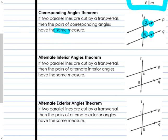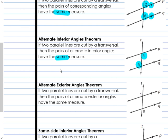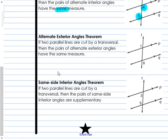The alternate interior angles theorem says: if two parallel lines are cut by a transversal, then the pairs of alternate interior angles have the same measure. So 4 and 5 are alternate interior — they're inside those parallel lines, they're alternate, on opposite sides of the transversal — and they are also equal to each other. The alternate exterior angle theorem says: if two parallel lines are cut by a transversal, then the pairs of alternate exterior angles also have the same measure. So 1 and 8 are alternate exterior — on opposite sides, outside the lines — they also have the same measure.